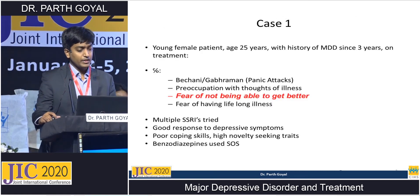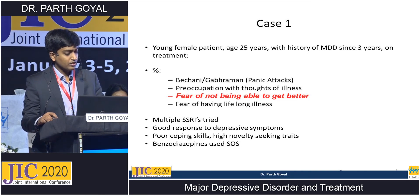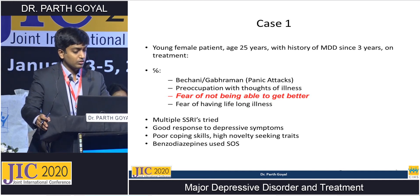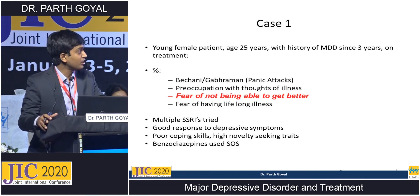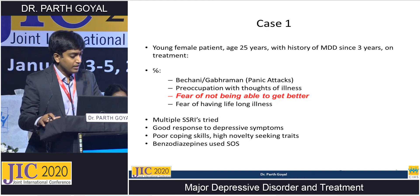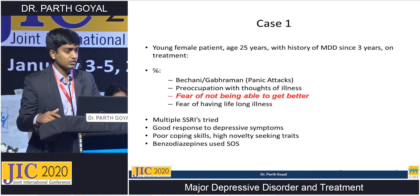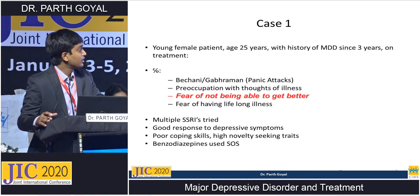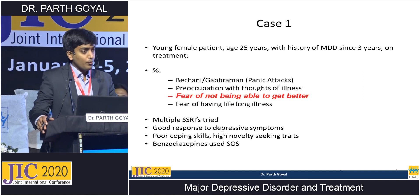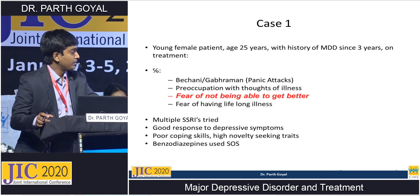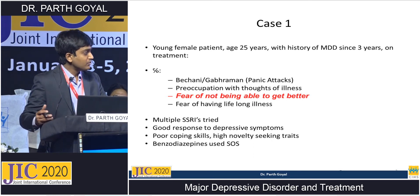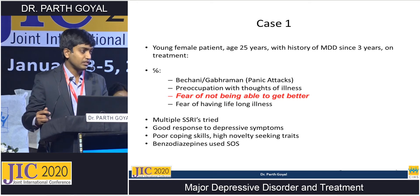Coming to our first case: a young female patient, 25 years of age, with a history of major depressive disorder for 3 years. She is on treatment, but currently her main complaints are anxiety and multiple panic attacks throughout the day. She is preoccupied with the thought of her illness, has a fear of not getting better, and a fear of having a lifelong debilitating illness. She has been given trials of multiple SSRIs — escitalopram, fluoxetine, sertraline — and responded well to her depressive symptoms, but anxiety symptoms do not respond well. She has very poor coping skills, is not ready for psychotherapy, and has high novelty-seeking behavior. Benzodiazepines have not been used regularly due to high addiction potential.